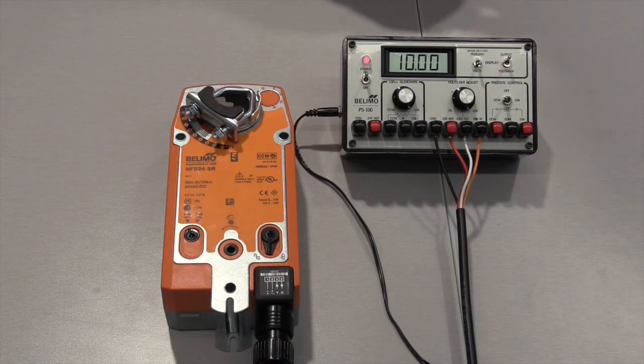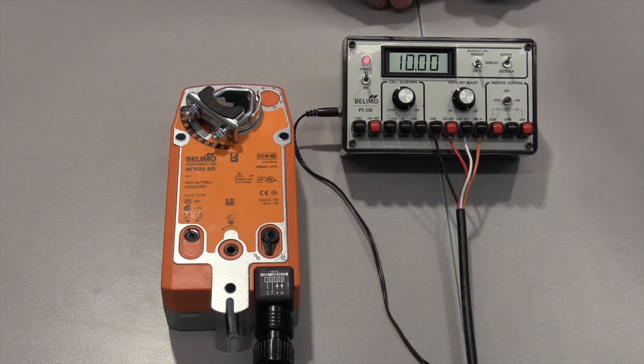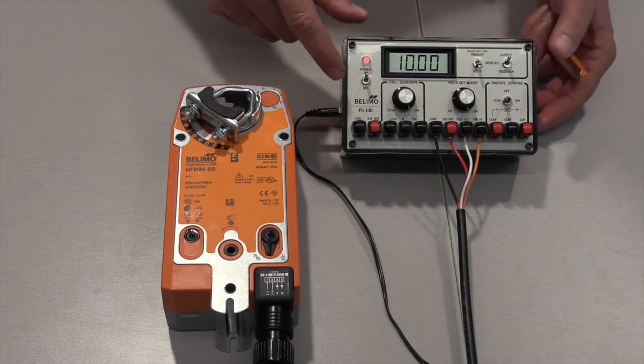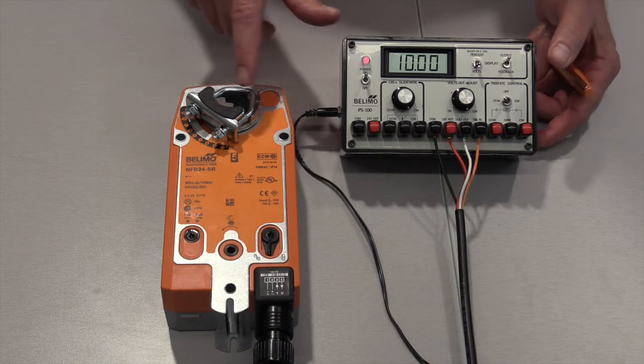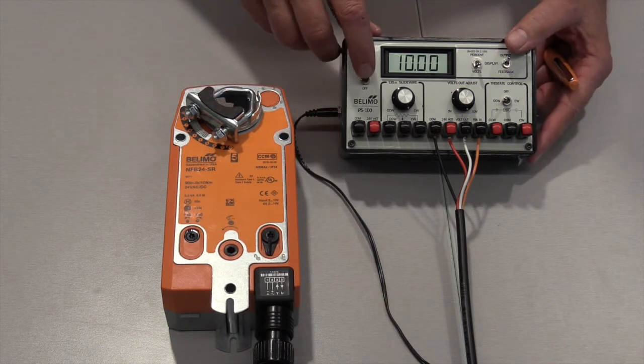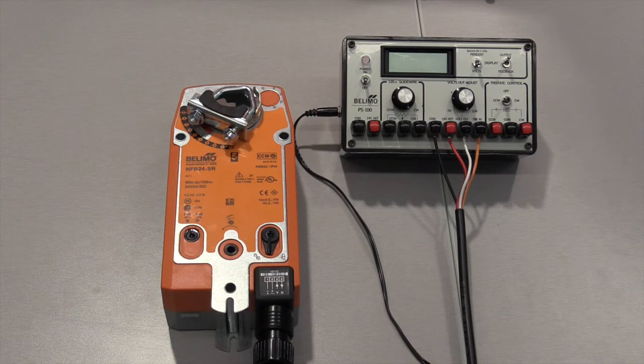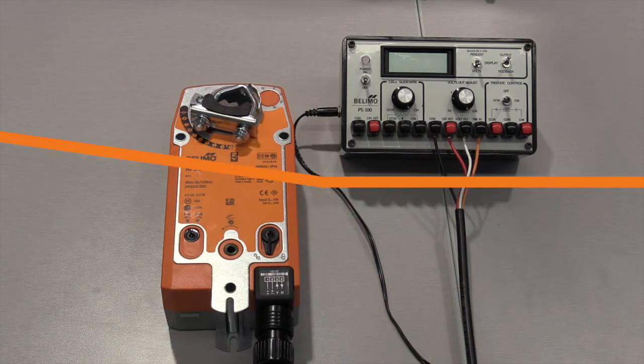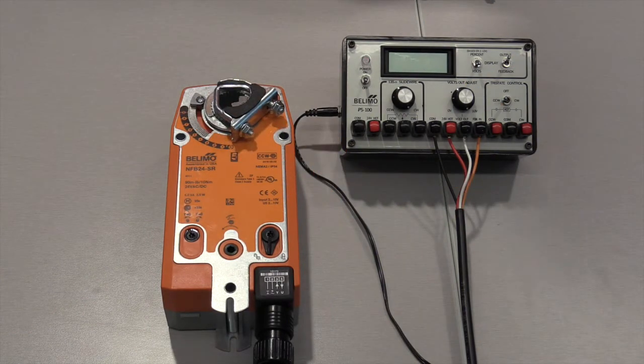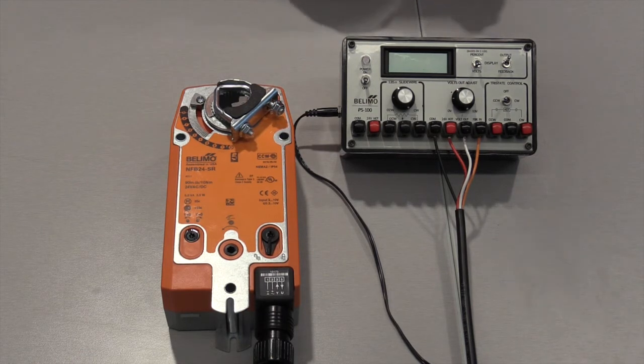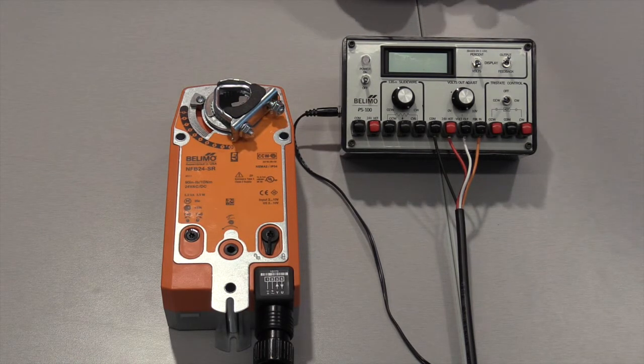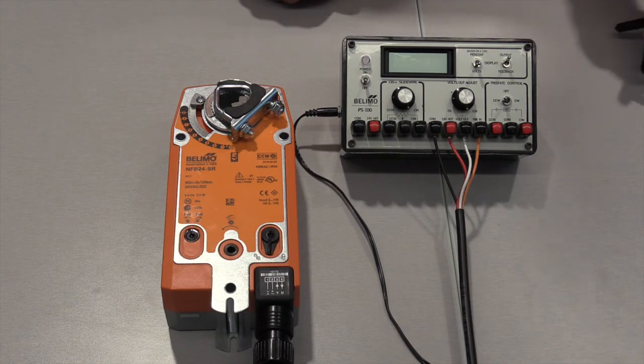Now as I said earlier, this is a spring return actuator. On a loss of power, I'm going to kill the power here. On a loss of power this will spring closed or it will fail closed. Now I also could have given it a two volt signal and it would have closed, moved to the closed position. It would have done the same thing.